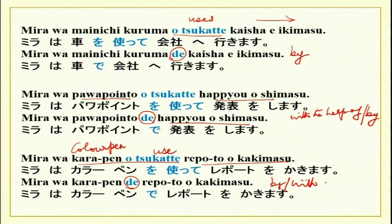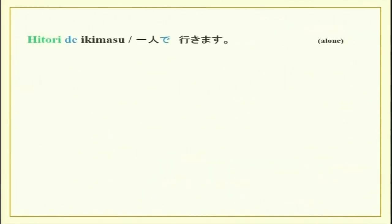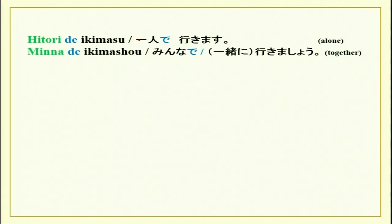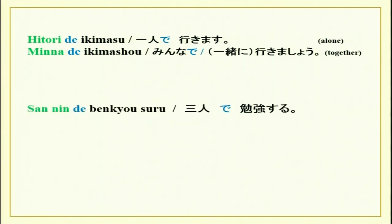Another de which we learned is used with numbers. Hitori de ikimasu — I go alone. Minna de ikimashou — let's go together. San nin de benkyoshimashou — let's study together as three people. It could be any number: hitori de, futari de, san nin de, yon nin de, go nin de — meaning alone, two people, three people, four people, whatever the number.